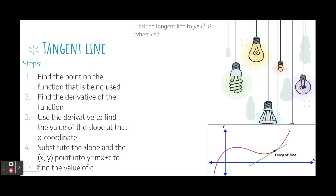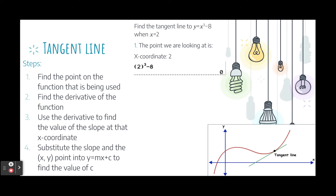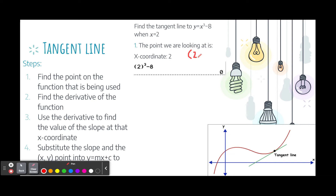Let's do an example. Find the tangent line to the function x cubed minus 8 when x equals 2. First, we need to find the point on the function. We know x equals 2, so we replace x with 2 in our function and get y equals 0. Therefore, the point at which we are finding the tangent line is (2, 0). We'll use this coordinate in the final step.